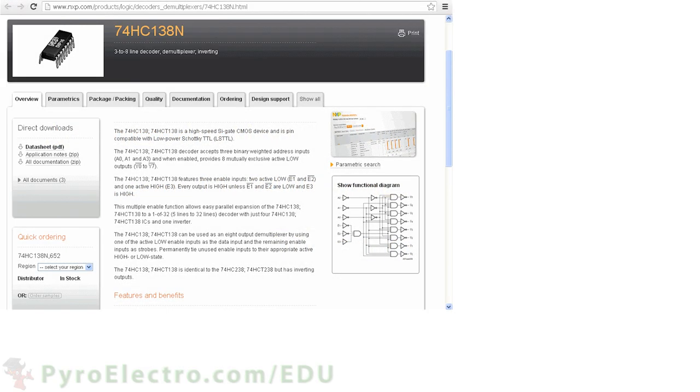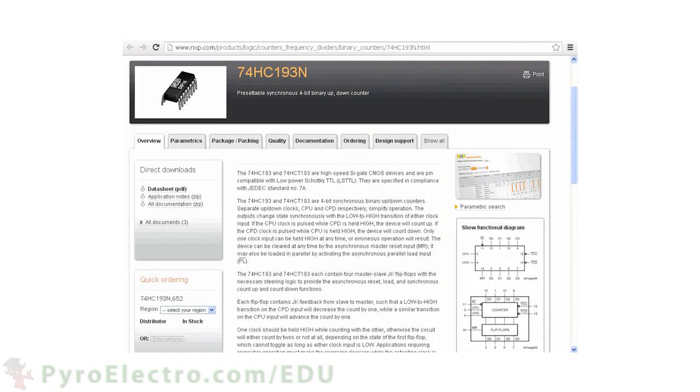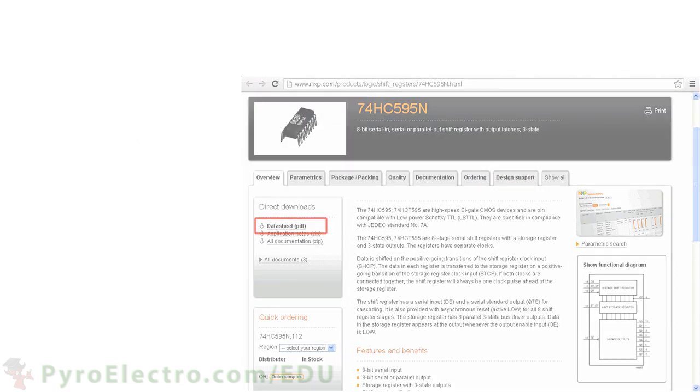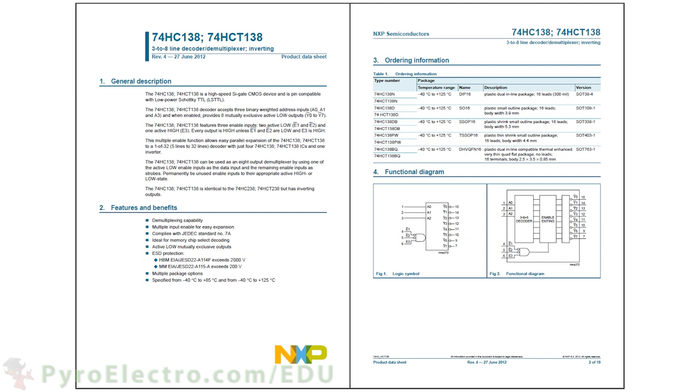The three ICs that we'll be taking a closer look at today are the 74HC138, a 3-to-8 decoder, the 74HC193, a 4-bit counter, and the 74HC595, an 8-bit shift register.